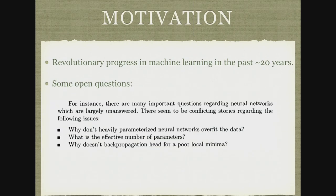So the motivational slide: we all know there was some revolutionary progress in machine learning done in the last 20 years or so. But there are also some open questions. I take a snapshot from an article summarizing probably the three most relevant questions for me. First: why don't heavily parametrized neural networks overfit the data? This riddle of over-parametrization — even though we have so many parameters and many ways to fit the training data, the algorithm somehow chooses a configuration that also generalizes well.